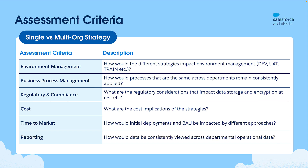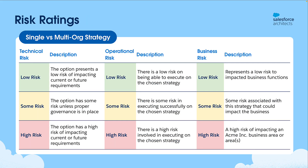Now in order to complete a side-by-side comparison, we need a way to rate each option. I would have typically used a risk rating split across three areas: the technical risk, the operational risk, and the business risk. This prevents the decision being solely a technical one, with importance given to how we'll support the business after go-live. And as you can see, the risks use a traffic light system to indicate low, some, or high risk.